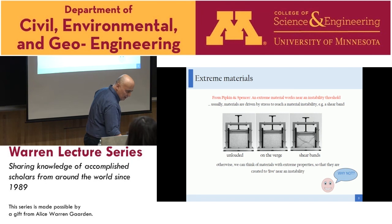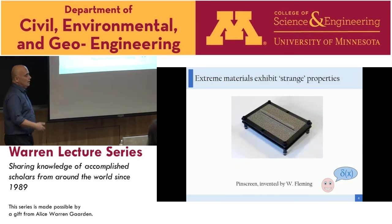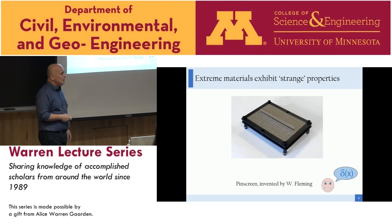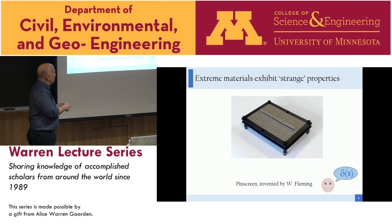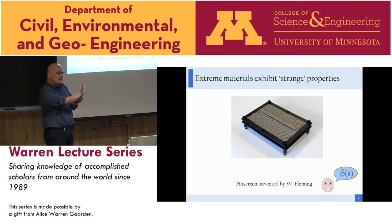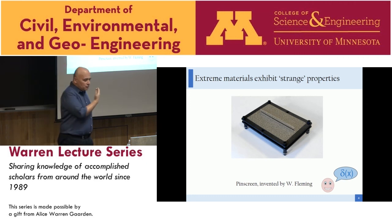A very simple example of an extreme material is a toy invented by the architect Fleming. To me it's the best way to see the concept of the Dirac delta for an engineer. If we push in one direction, the load does not diffuse — in one direction it's very stiff, in the other direction very weak.